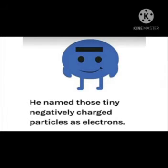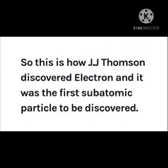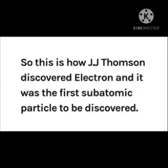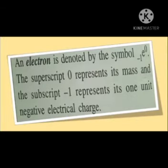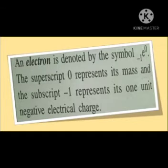In this way, Sir J.J. Thomson discovered electrons, and it was the first subatomic particle to be discovered. An electron is denoted by the symbol 'e' with superscript 0 and subscript −1. The superscript 0 represents its mass, and the subscript −1 represents its one unit negative electrical charge.